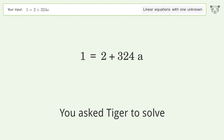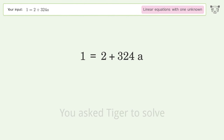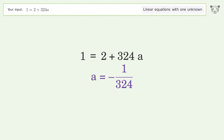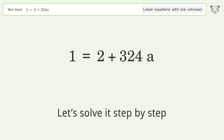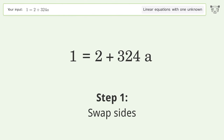You ask Tiger to solve this — it deals with linear equations with one unknown. The final result is a equals negative 1 over 324. Let's solve it step by step: swap sides.